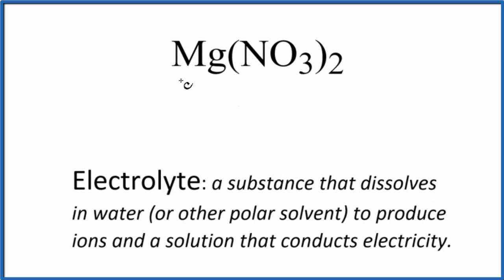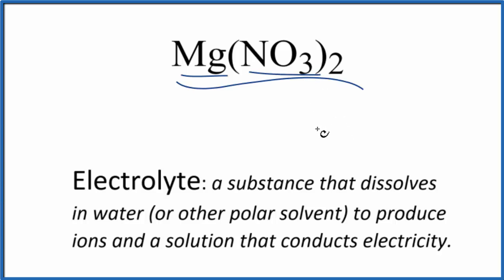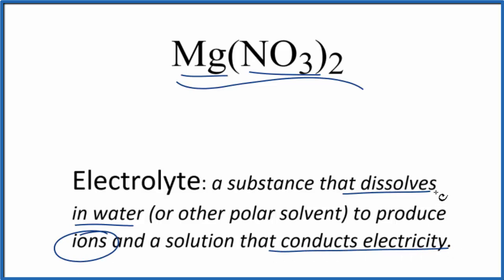The question is whether Mg(NO₃)₂, magnesium nitrate, is an electrolyte or a non-electrolyte. The definition of an electrolyte is a substance that dissolves in water or another polar solvent, produces ions, and those ions allow the solution to conduct electricity.